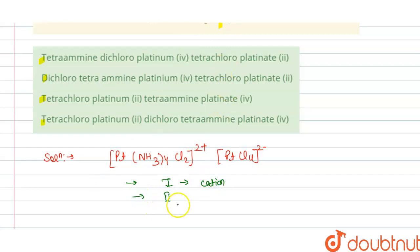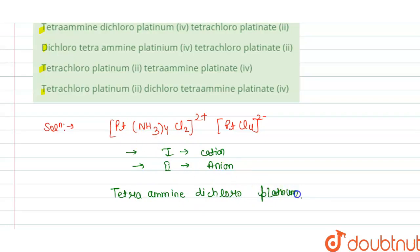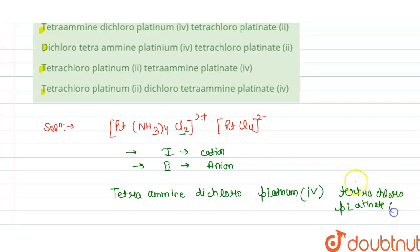After that, secondly, we write the IUPAC name for the anion. The cation is [Pt(NH3)4Cl2]2+, so this is tetraamine — NH3 is amine — dichloro, platinum, and we write the oxidation state of Pt in Roman numerals, which is IV, giving tetraaminedichloroplatinum(IV). For the anion, the IUPAC name is tetrachloroplatinate(II), with oxidation state minus 2, written as II in Roman numerals.